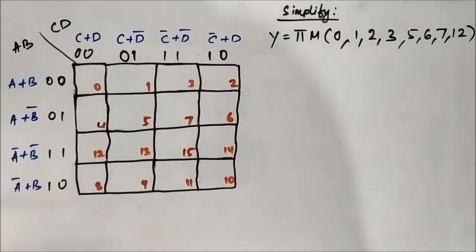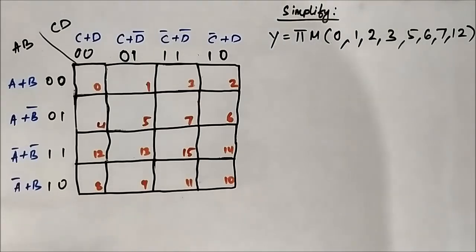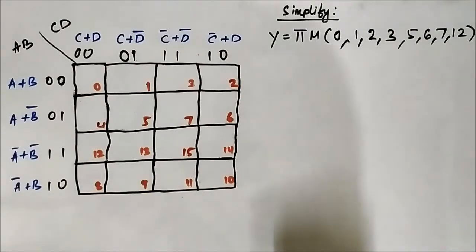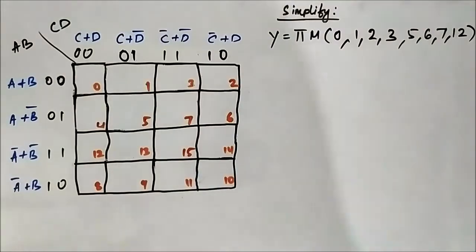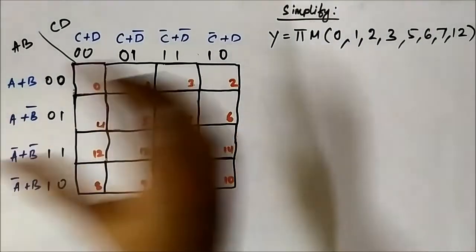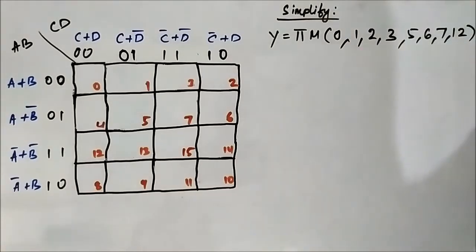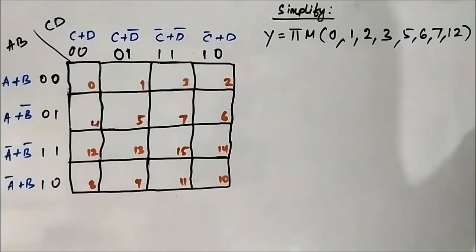This is the fourth question related to POS Kmap simplification. This is the Boolean expression given in terms of max term values. We have the format of POS Kmap ready with us. Directly we will map the respective cells. The max term values are 0, 1, 2, 3, 5, 6, 7, and 12.